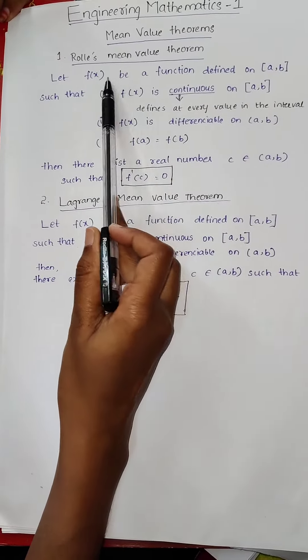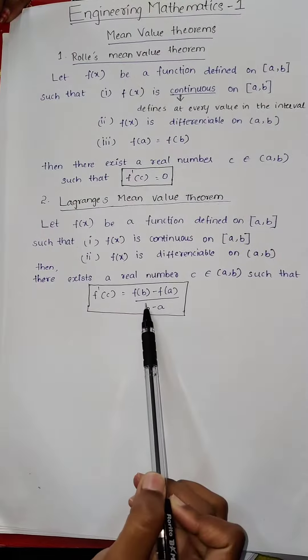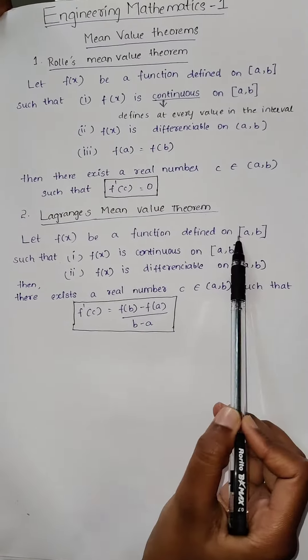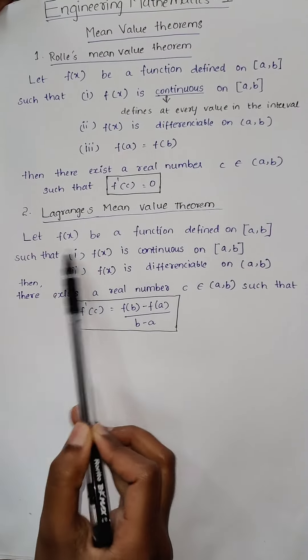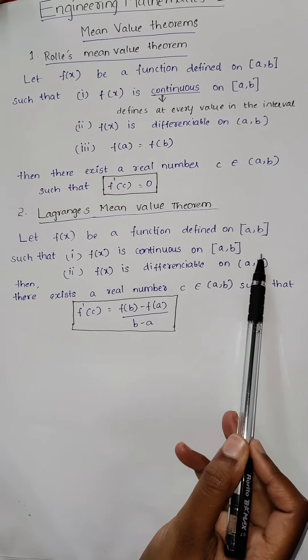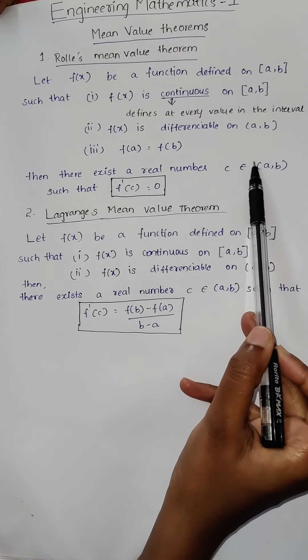It is same as Rolle's mean value theorem. The only difference is the condition. Let f of x be a function defined on closed interval a comma b as Rolle's mean value theorem. The first two conditions, f of x is continuous on closed interval a comma b, differentiable on open interval a comma b are same as the Rolle's mean value theorem.